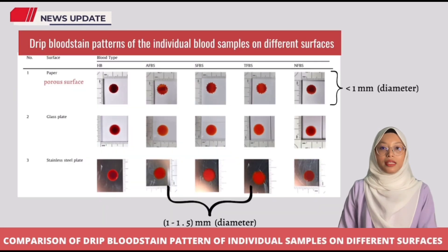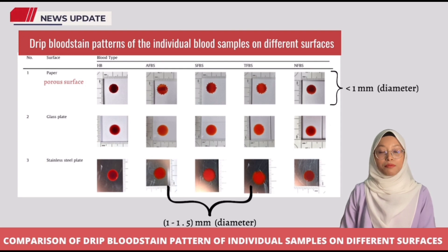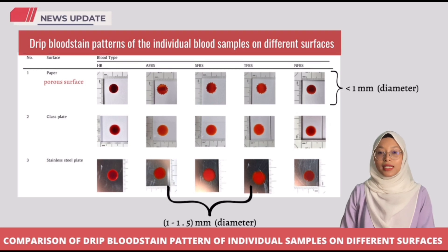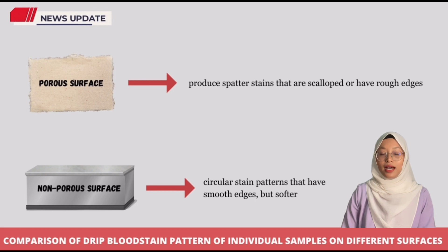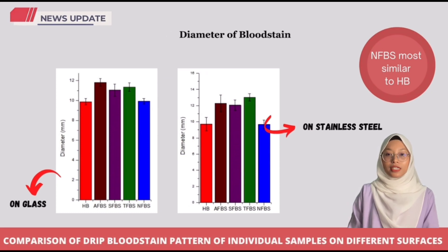In this research, the pattern of blood drips was compared on three different surfaces: paper, glass, and stainless steel. The type of surface that free-falling blood strikes affects the appearance of the resulting spatter. Hard non-porous surfaces produce circular stain patterns with smooth edges, while porous surfaces produce spatter stains that are scalloped or have rough edges. Based on the picture and data, NFBS shows the same circular shape and similar diameter on both glass and stainless steel, likely due to its almost similar surface tension value.